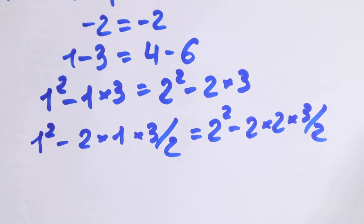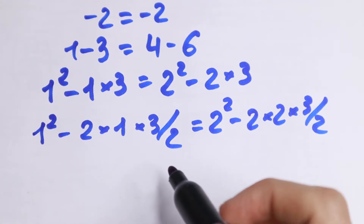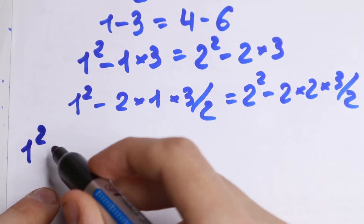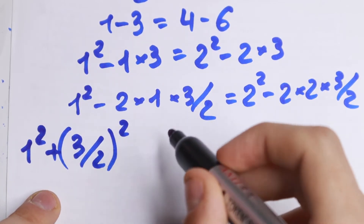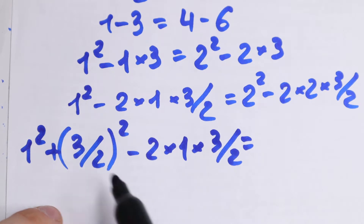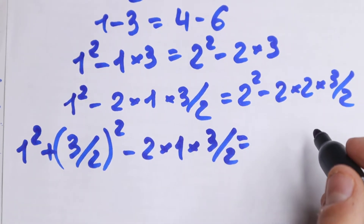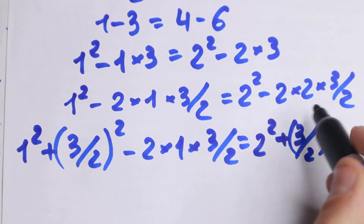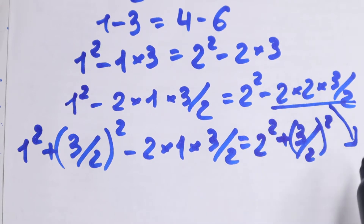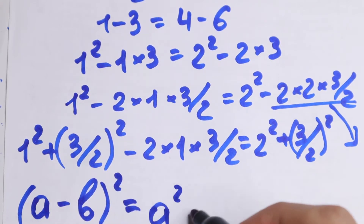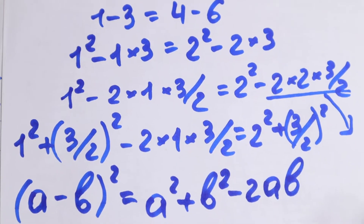So what we're going to do next? Take a look. Let's add 3/2 squared to both sides. On the left side: 1 squared, I add plus 3/2 squared, and subtract what we have right here — minus 2 times 1 times 3/2. I do the same on the right side: we will have 2 squared plus 3/2 squared. We just add 3/2 squared to both sides. Moreover, we need to know that if we have (a minus b) squared, we can write it as a squared plus b squared minus 2ab. This is a classic formula.